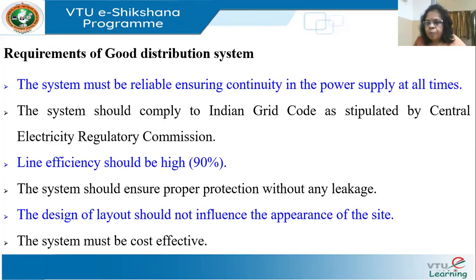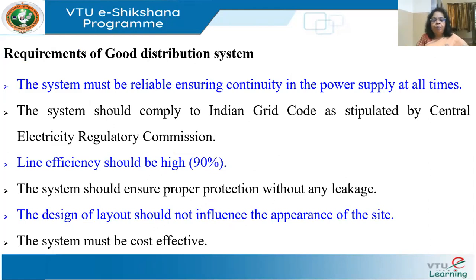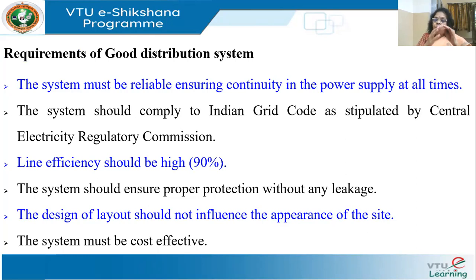When designing a distribution system, the key requirements include: the system must be reliable with continuous power supply; it should comply with the Indian grid code as stipulated by the Central Electricity Regulatory Commission, or the equivalent grid code of the particular country; and regulations of that country must be obeyed. In large countries like the US, each state may have its own regulation.